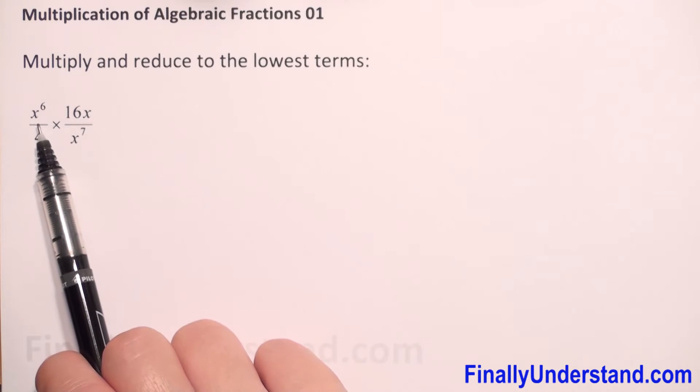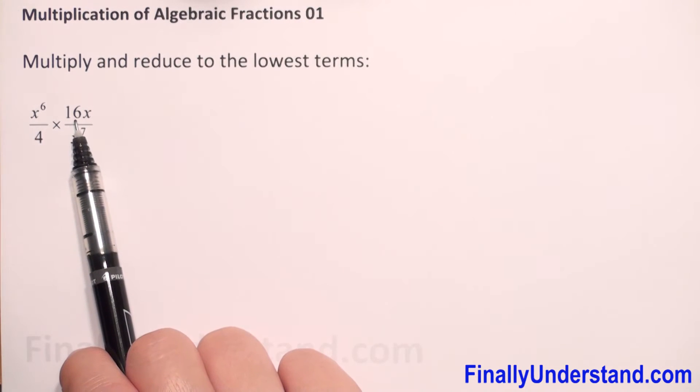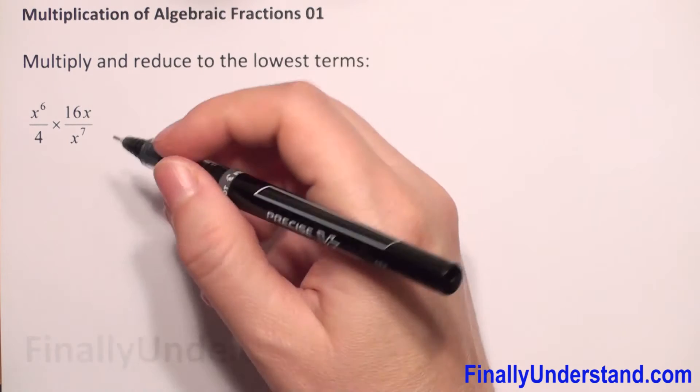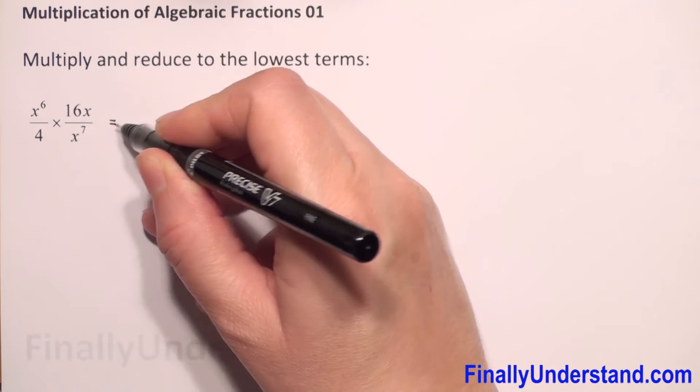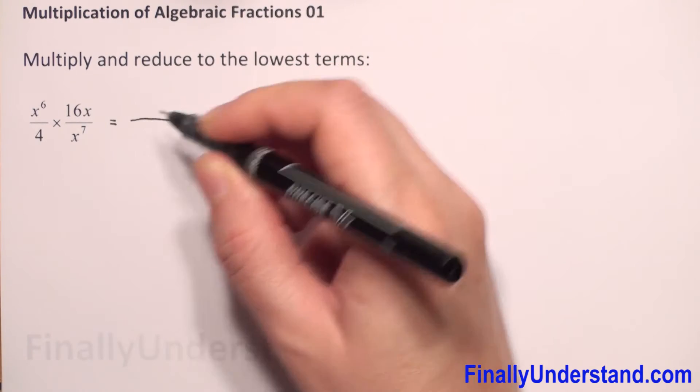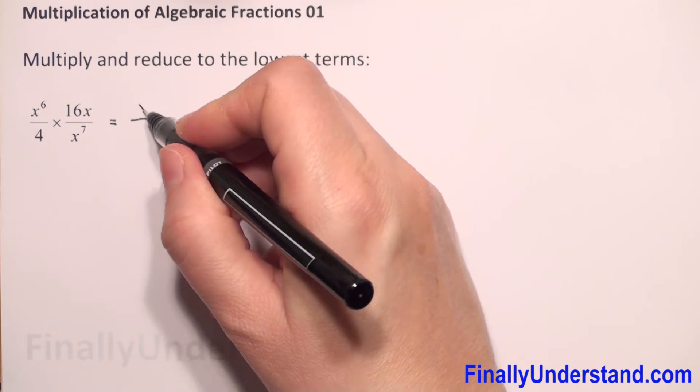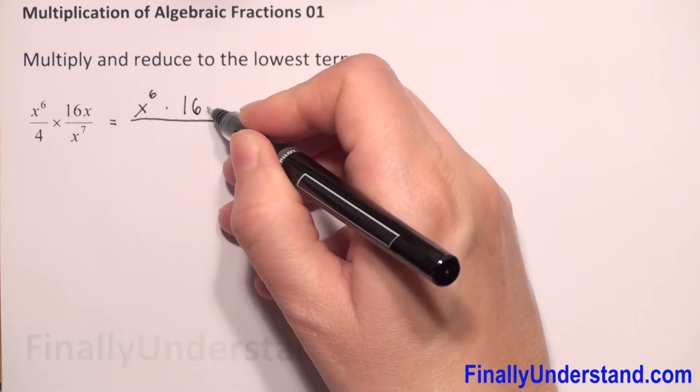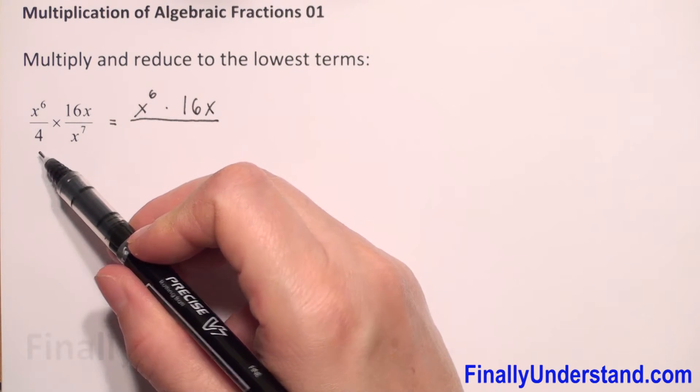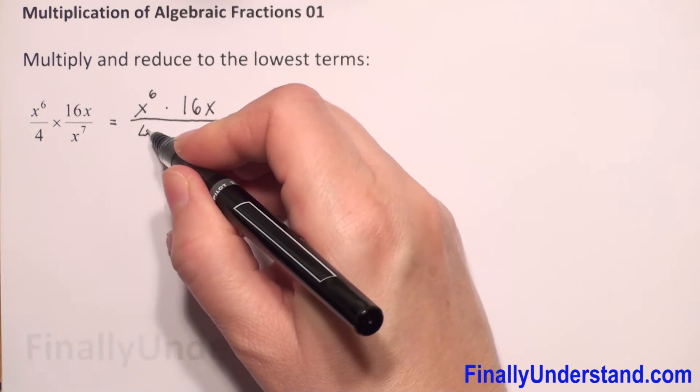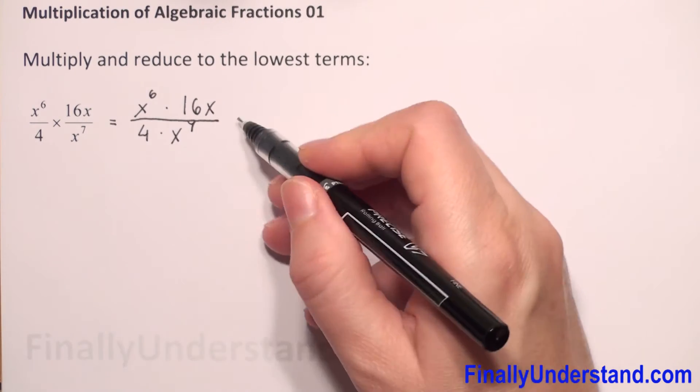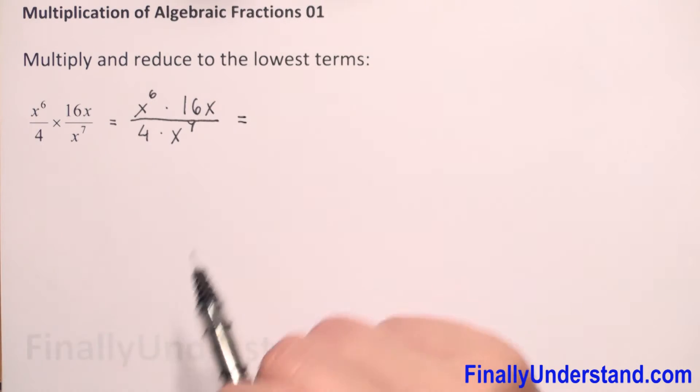Because we have x to the 6th power and 16 times x, we can rewrite this. This equals x to the 6th power times 16x in the numerator, and in the denominator we have 4 times x to the 7th power. Next step,